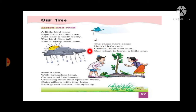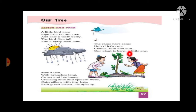Now what happens? 'The rains have come, hurry let's run.' So the rain is there and the sun is there — clouds, rain and sun. 'Our plant is born, a little one.' The berry seed was planted and now what has become? A small plant — little or small. Here is a small plant.